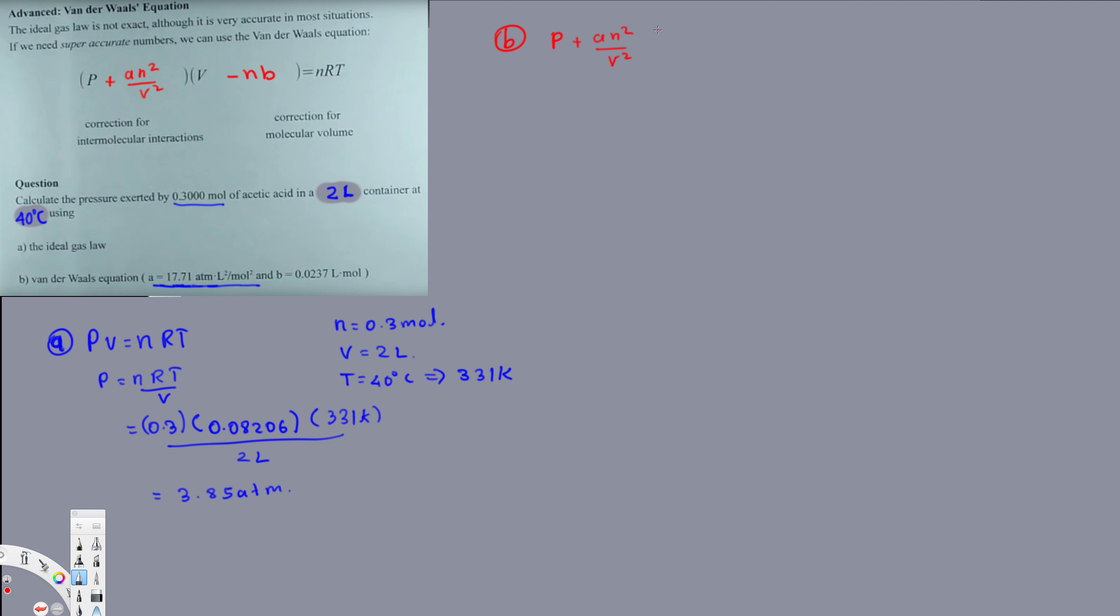So this is what we are going to use. Let's apply all the values. Maybe rearrange this equation in terms of P first, that will make everything easier. Let's bring this one to the other side first: P plus a n squared over V squared is equal to nRT divided by V minus nB.